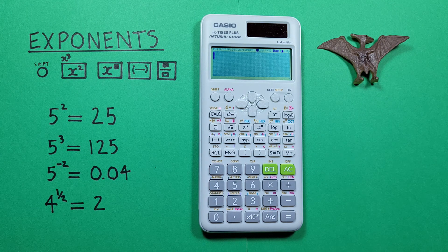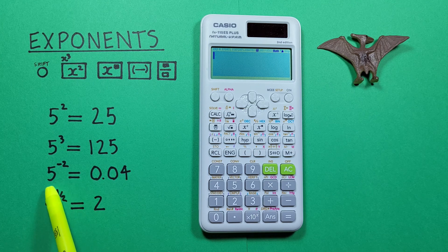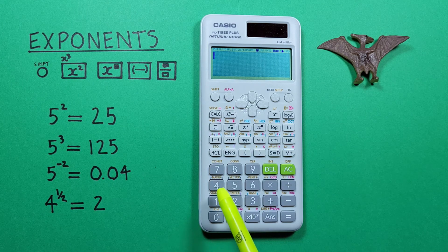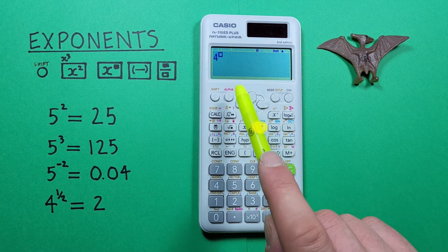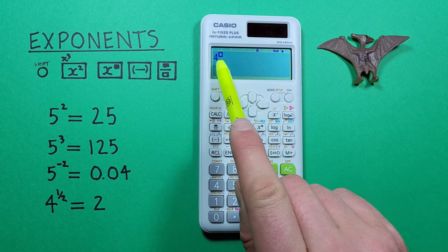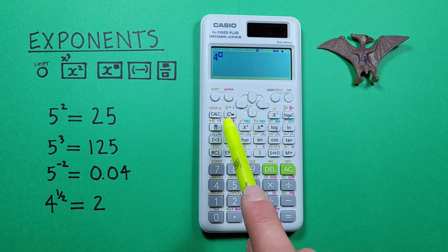We can also use this to solve exponents that are fractions. For example, 4 to the power of 1 over 2. We place the 4 on our screen and then the x exponent key, and we see we have that box for our exponent. And since our exponent is a fraction, we hit the fraction key now.